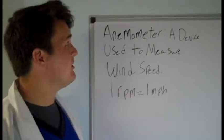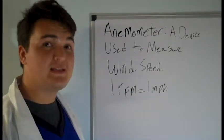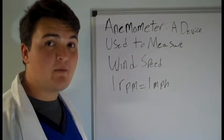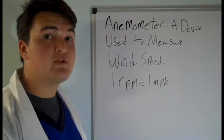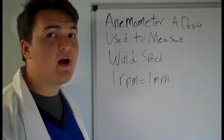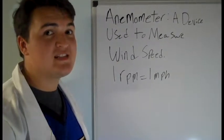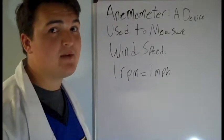So, an anemometer is a device that's used to measure wind speeds. Now, you've got to remember when we're using this that one rotation per minute equals one mile per hour. So, if it rotates ten times in a minute, you're going ten miles per hour.